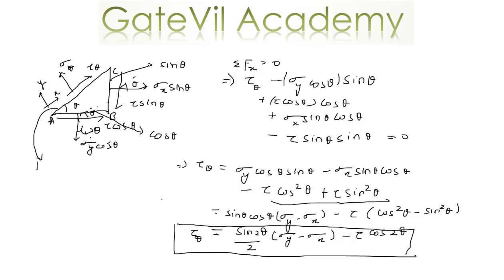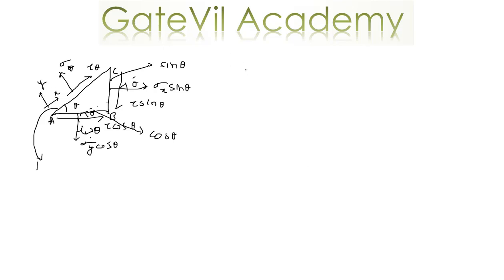This gives us the expression for tau theta for a general 2D stress system. For any special case, such as simple tension where Sigma X equals zero and tau equals zero, you can substitute those values to get the shear stress on an inclined plane for that specific case.